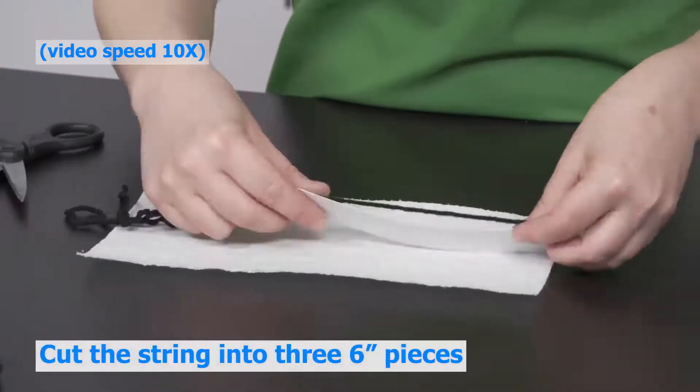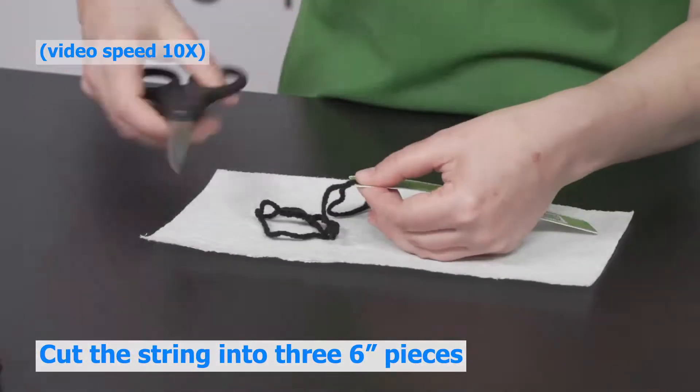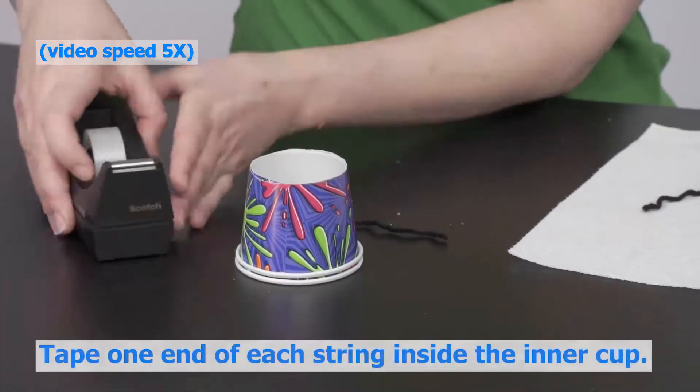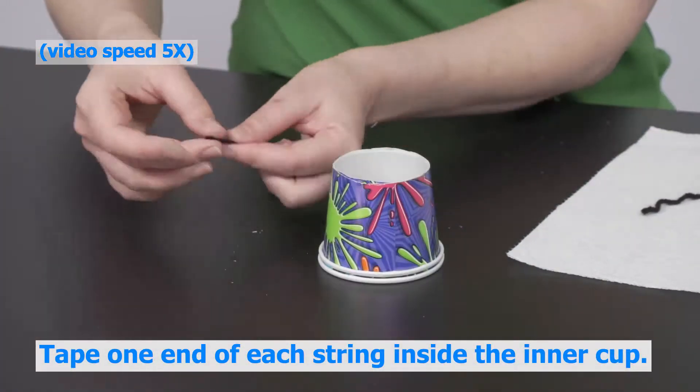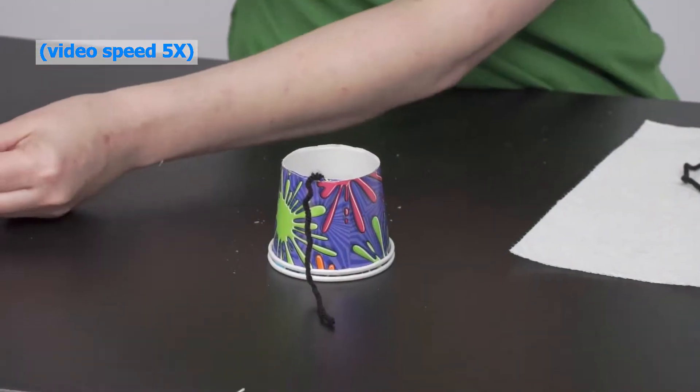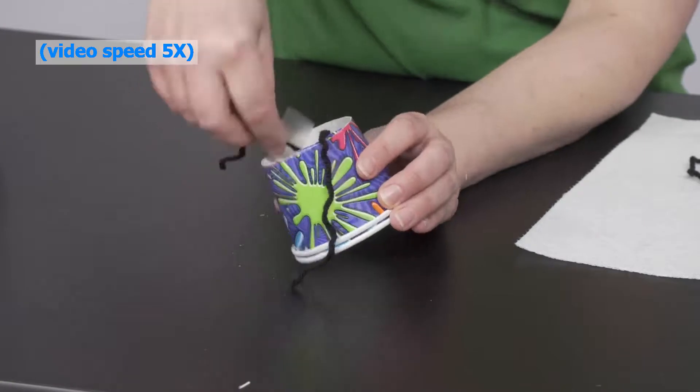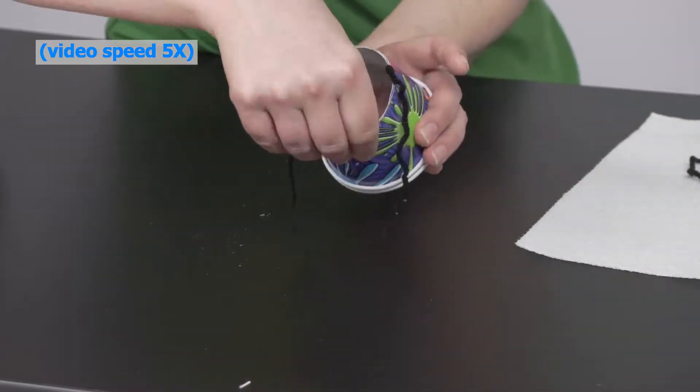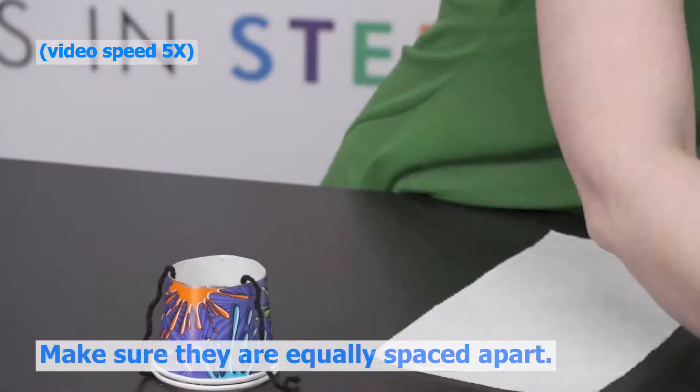Cut your string into three six-inch pieces. Tape one end of each of the three strings to the inside of the inner cup. Make sure they are equally spaced.